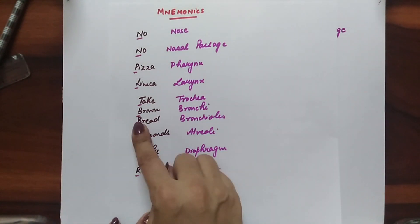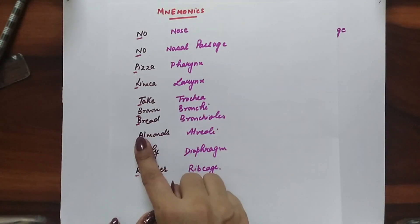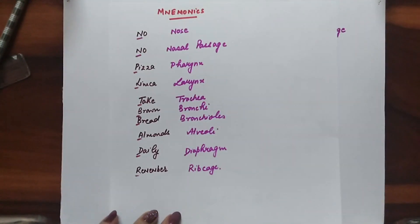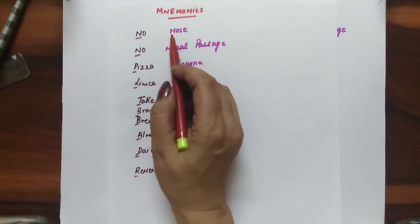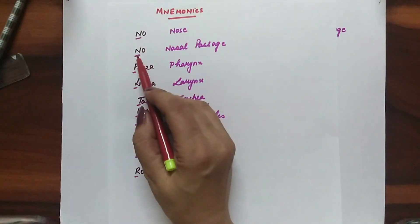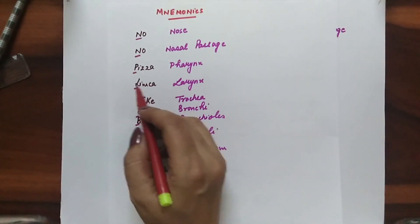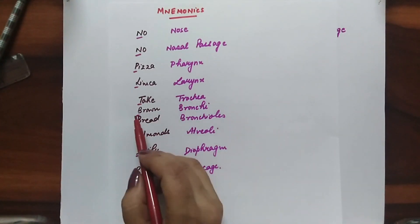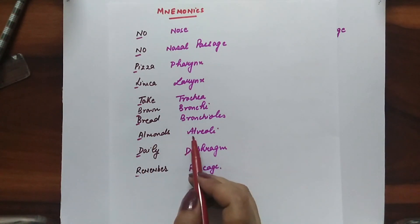The first letter of every word will give you the hint for the organs involved. N for nose — air will first enter the nose — then N for nasal passage, P for pharynx, L for larynx, T for trachea, B for bronchi, and A for alveoli.